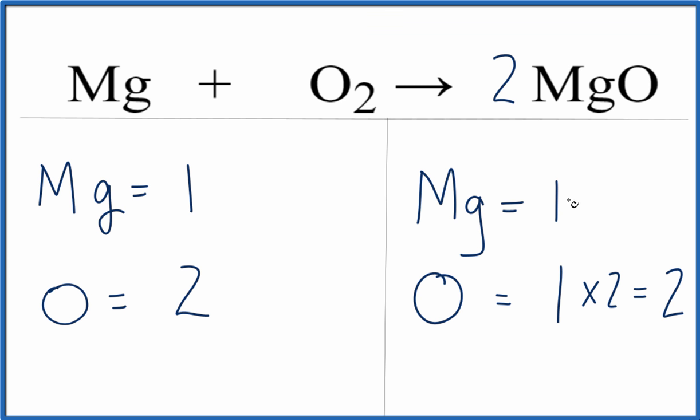So we have one magnesium times the two. Now we have two magnesiums. That's not too difficult to fix because we have one here, but if we put a coefficient of two in front of the magnesium, one times two, that would equal two.